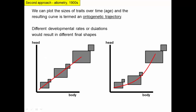Looking at an ontogenetic trajectory, a linear relationship shows the body and head getting bigger at the same rate. Alternatively, the body could get bigger first or more quickly, with the head catching up later. If development were prolonged or stopped at different points, you'd end up with different proportions — a smaller head on a large body, or a smaller and differently shaped individual. Different developmental rates or durations result in different final shapes.